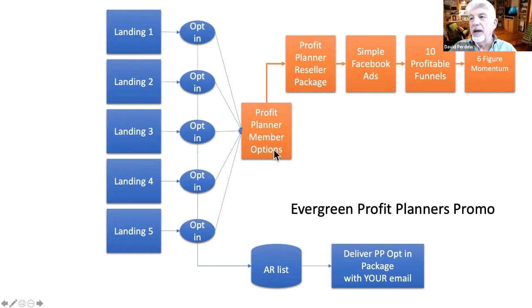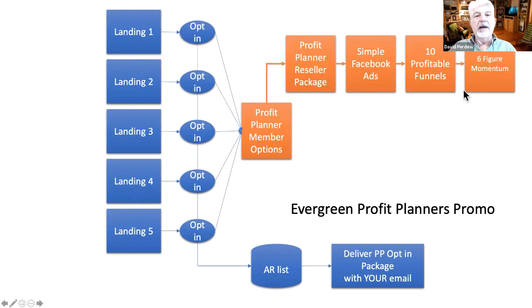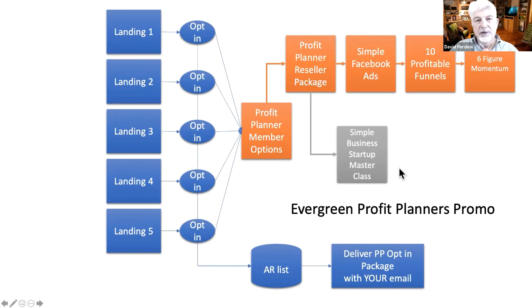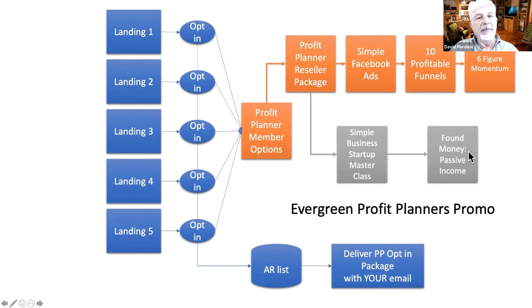Six Figure Momentum is also recurring, so you have multiple opportunities for recurring income. The front-end member options are 100% commission; everything else is 50%. These funnels get tweaked all the time — we may move things around, put something in, or take something out — to ensure the best conversions for you. We test these things constantly. If they don't take the Profit Planner reseller package, they go to the Simple Business Startup Masterclass at 50% commission. If they don't take that, they go to the Found Money Passive Income downsell. This is the evergreen Profit Planners promo funnel.